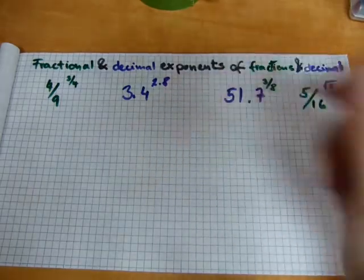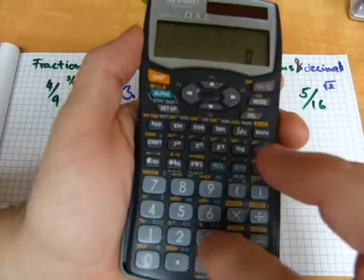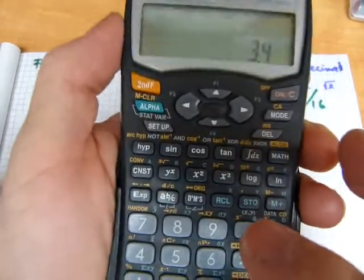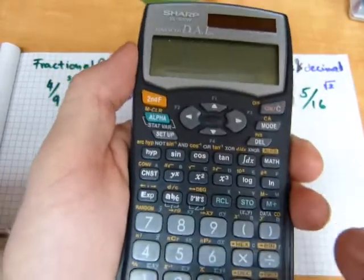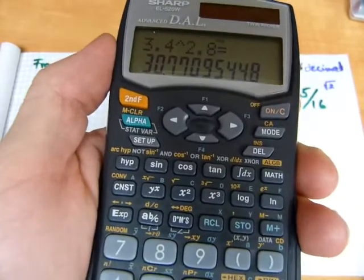And it works with decimals of course the same way. 3.4 to the power of 2.8 equals that number, 30.77.